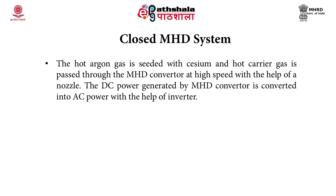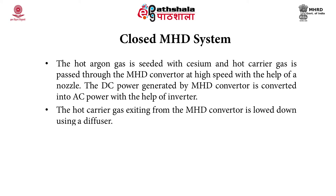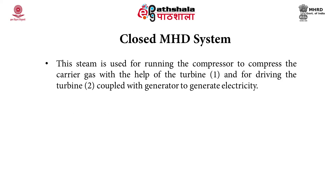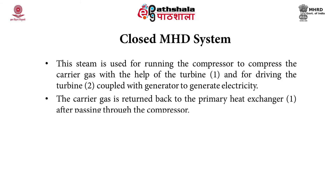The hot argon gas is seeded with cesium, and the hot carrier gas is passed through the MHD converter at high speed through a nozzle. The DC power generated by the MHD converter is converted into AC power with an inverter. The hot carrier gas exiting the MHD converter is slowed down using a diffuser, then passed through a waste heat boiler or heat exchanger to generate steam. This steam runs the compressor to compress the carrier gas and drives a turbine coupled with a generator to produce electricity. The carrier gas is returned to the primary heat exchanger after passing through the compressor.